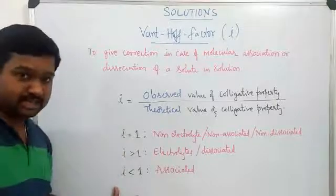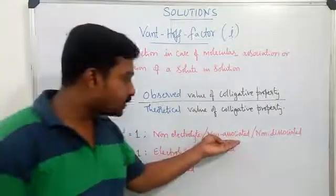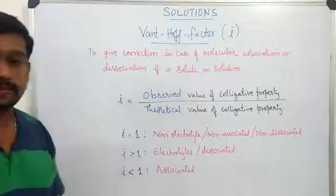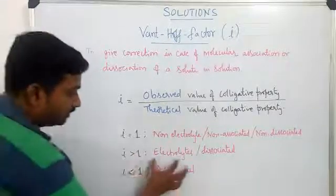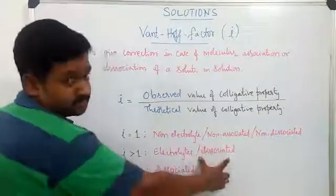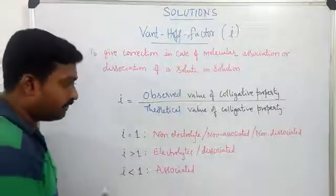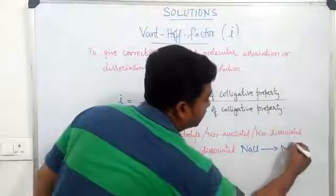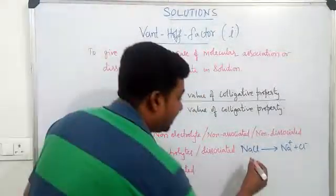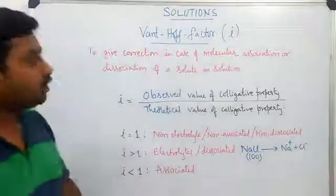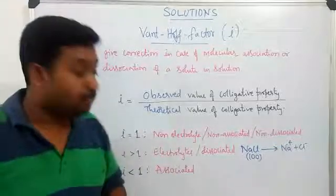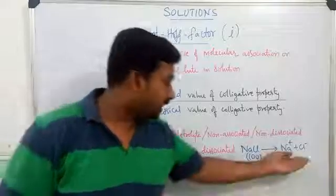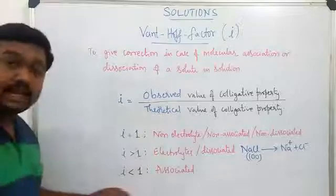The value of i depends on the substance. When the substance is a non-electrolyte, non-associated, and non-dissociated — meaning no change in the number of particles — the value of i equals 1, and the formula remains the same. When the substance is an electrolyte that undergoes dissociation, i is greater than 1. For example, NaCl dissociates into Na⁺ and Cl⁻. If 100 molecules of NaCl are added to water, practically there are 200 particles in solution, so the observed molecular mass will differ.